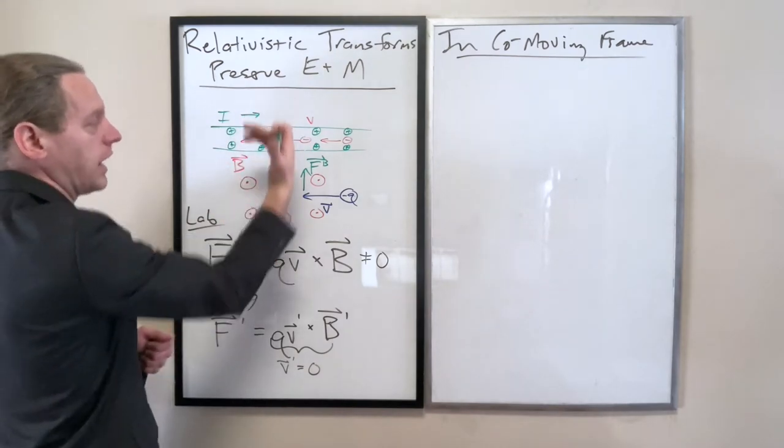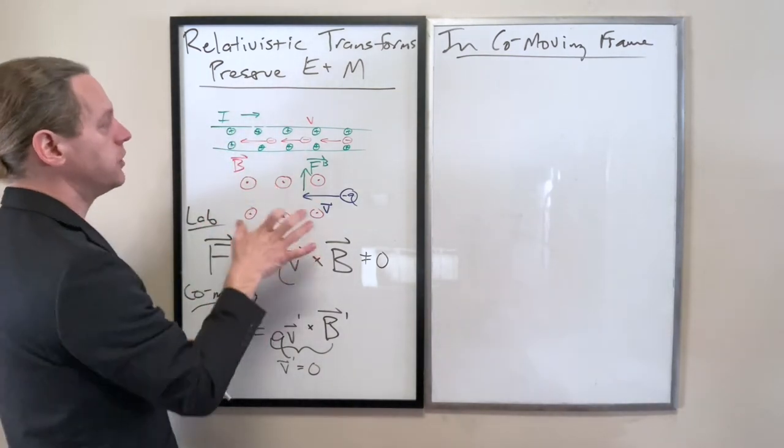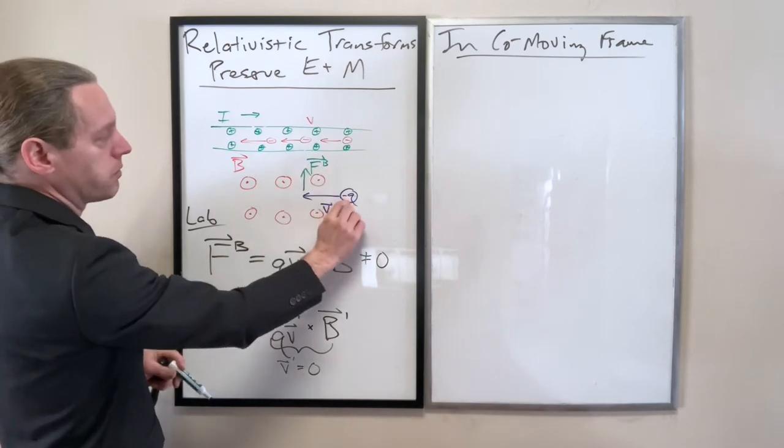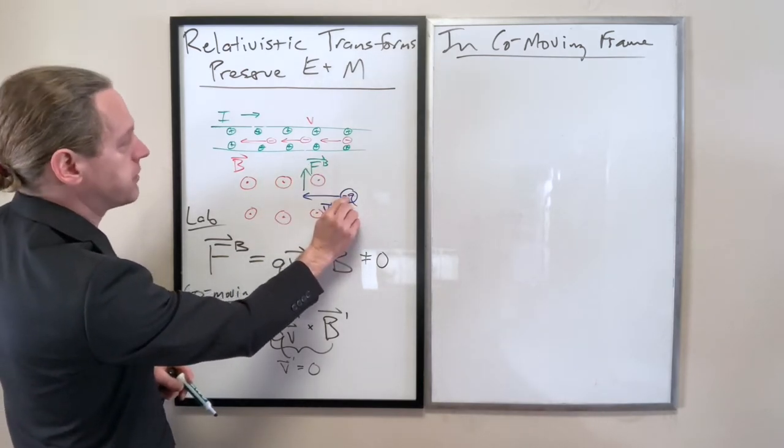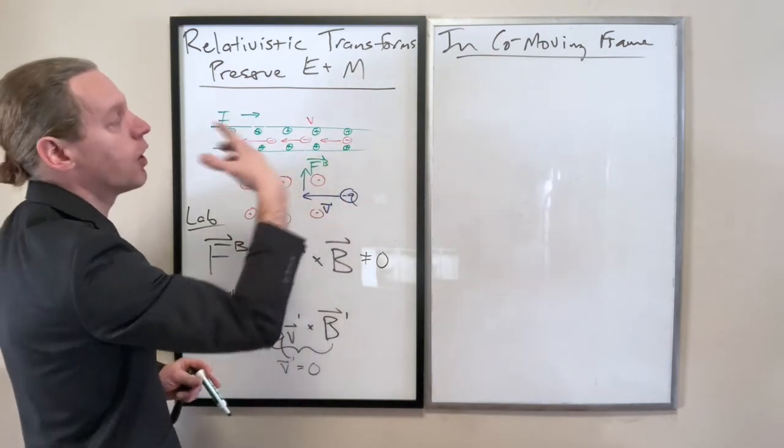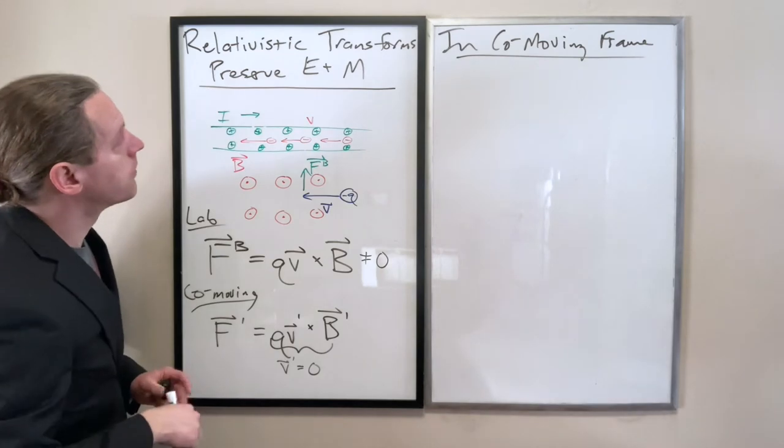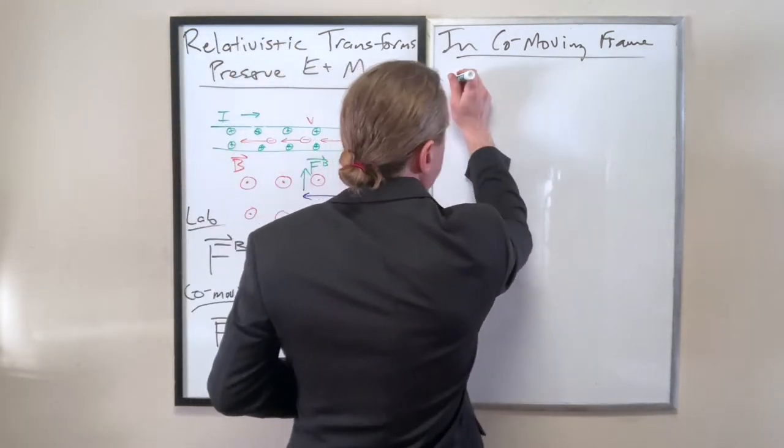And by the way, the other thing that we know, we should establish that. In the lab frame, there is no overall charge of the wire. There are exactly the same number of electrons as there are protons, so that there is no electrical attraction. That's one of the other underlying assumptions. So we've established that it does not happen before we plug it.